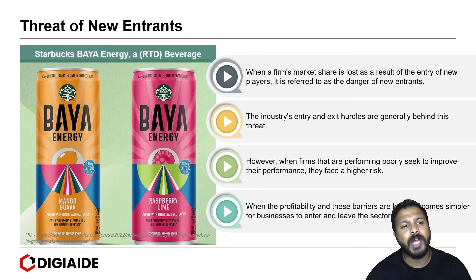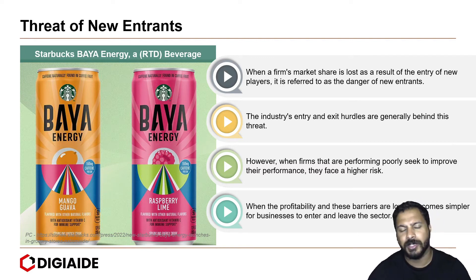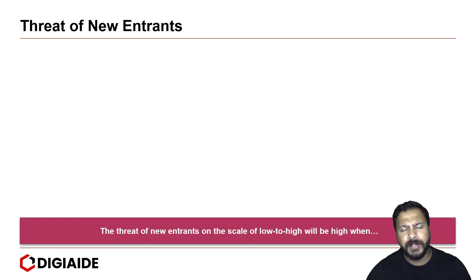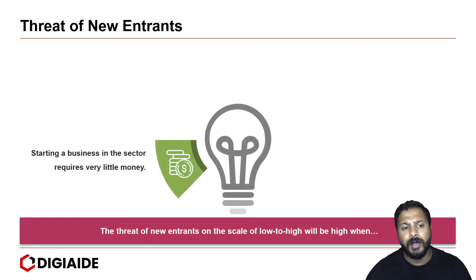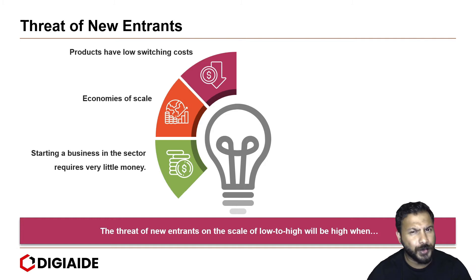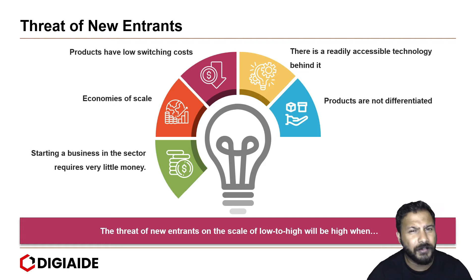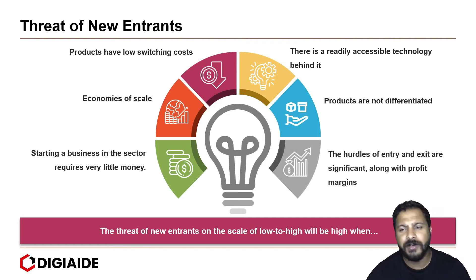For instance, Starbucks recently entered the energy drink segment by launching Bioenergy, a ready-to-drink beverage, thus going head-on with Red Bull in that segment. The threat of new entrants on a scale of low to high will be high when: starting a business requires very little money; economies of scale apply; products have low switching costs; technology is readily accessible; products are not differentiated; and the hurdles of entry and exit are significant along with profit margins.